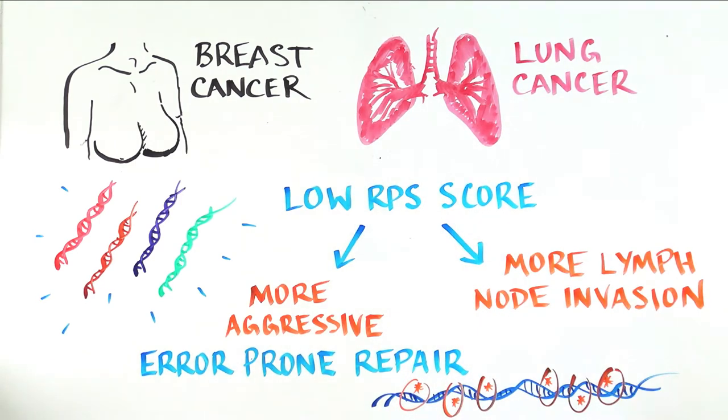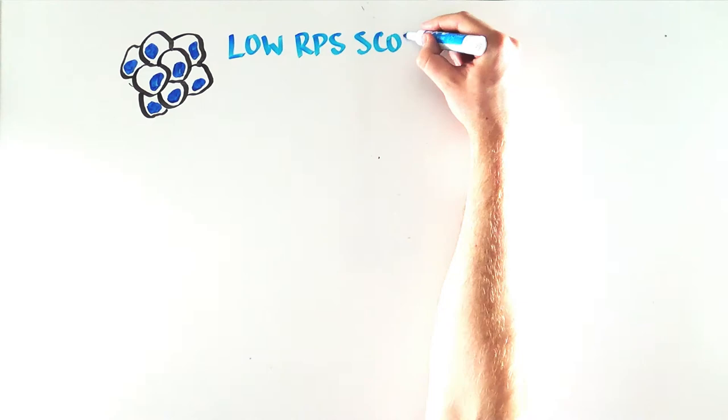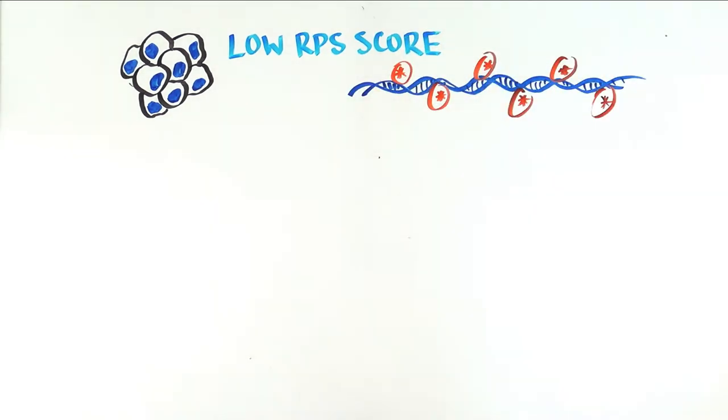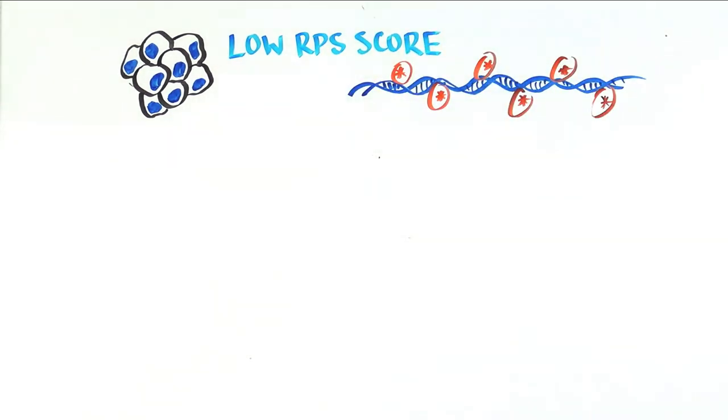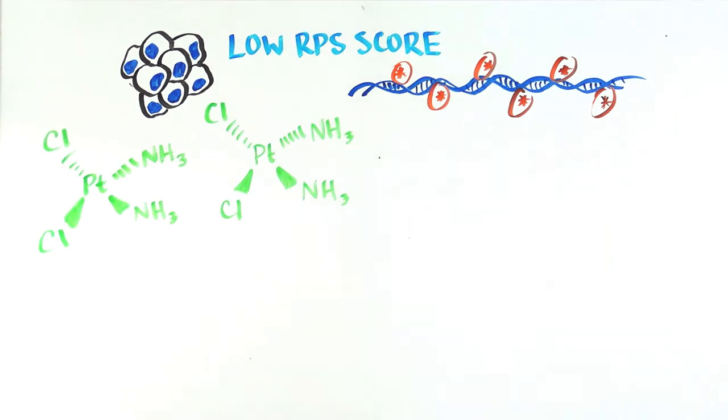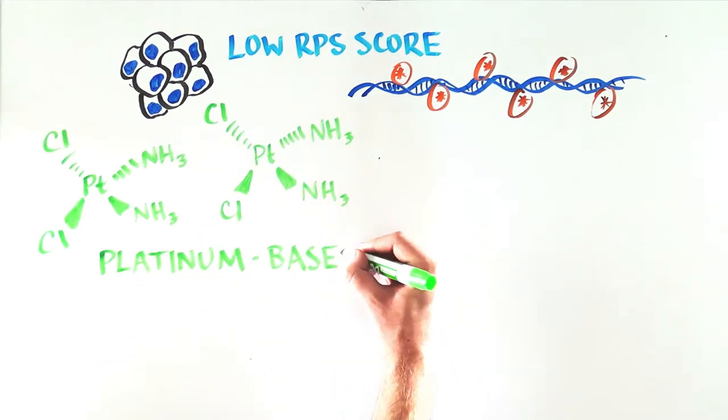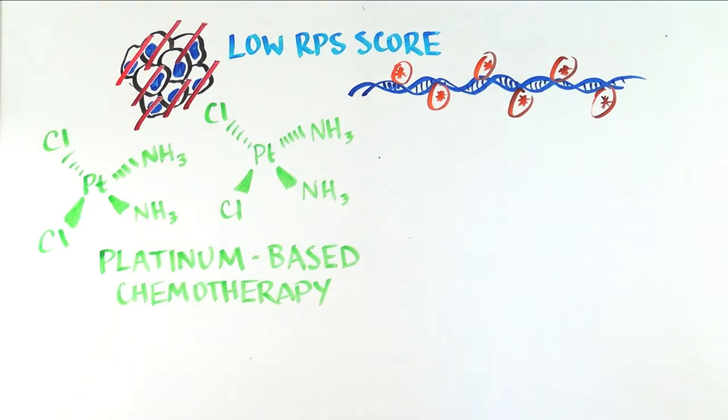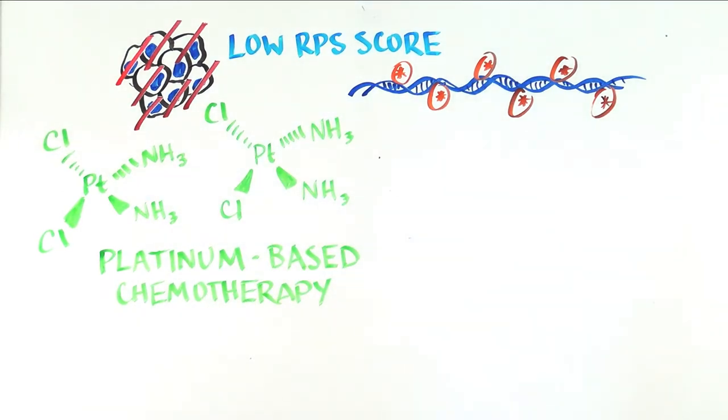The scientists took this a step further and wanted to find a way to treat these tumors with a low RPS score that introduce errors when they repair DNA. They found that specific types of chemotherapy that are based on platinum can very efficiently kill cancer cells that have a low RPS score and that repair DNA using the error-prone method.